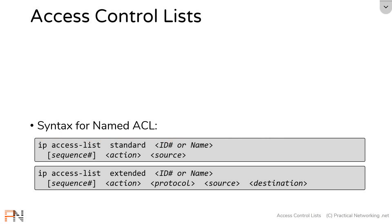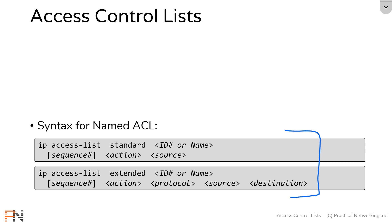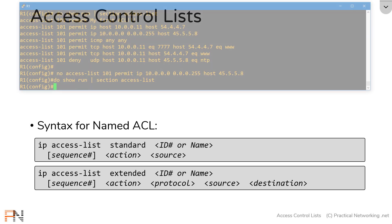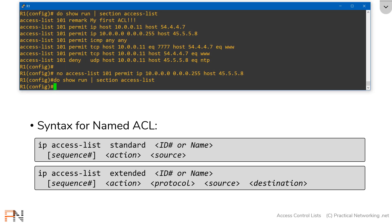In the last video, we picked apart each of the fields in the syntax for named access lists. If you're unsure what either of these fields mean, go and review the last videos. In this video, we're going to pick up right where we left off by reconfiguring our numbered access list as a named access list.